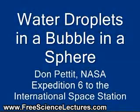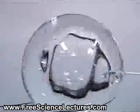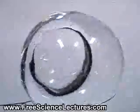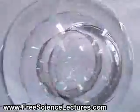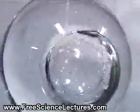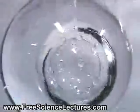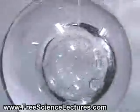Water droplets in a bubble in a sphere. Here we have a sphere of water, 75 millimeters in diameter, with an air bubble inside, about 35 millimeters in diameter, and we inject water droplets anywhere from 1 to 8 millimeters in diameter into the bubble.